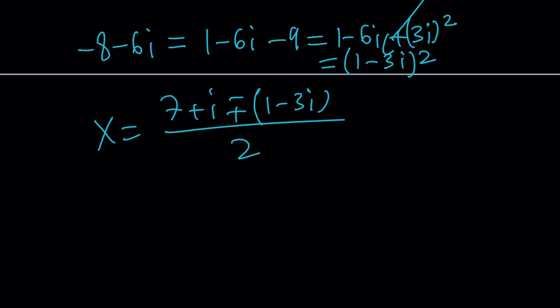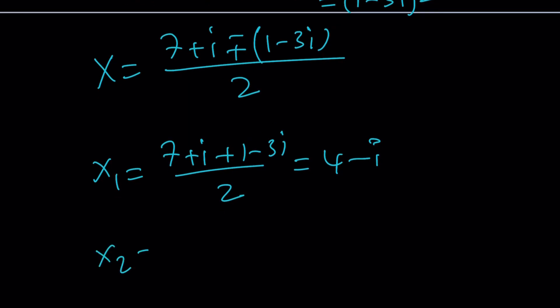So, if you want to write this as X sub 1 and X sub 2, that's fine too. We're going to get 7 plus I plus 1 minus 3I divided by 2. That's 8 minus 2I divided by 2, which is 4 minus I. And the other solution is going to be 7 plus I minus 1 plus 3I with the minus sign. And that's going to be 6 plus 4I divided by 2, which is 3 plus 2I.